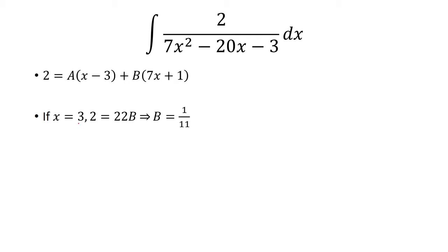So now we can plug in different values. First, I'm going to choose to plug in x equals 3. And when I do that, this goes away, and I have 22B is equal to 2. So B would be 1 over 11. Next I'm going to plug in negative 1 over 7, and that's going to get rid of this. So I'm going to have negative 22 over 7A is equal to 2. So A then is negative 7 over 11.